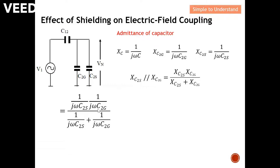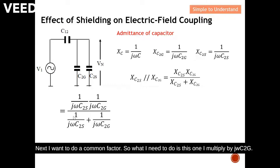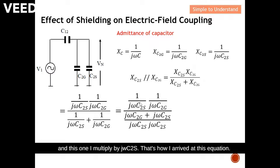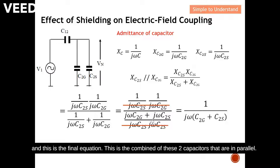Next I want to find a common factor. I multiply this term by jωC2G and this term by jωC2S — that's how I arrive at this equation. From here I see there are equal terms, so I cancel them off, and this is the final equation for the combined admittance of these two capacitors in parallel.